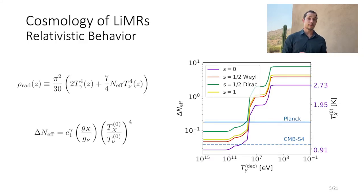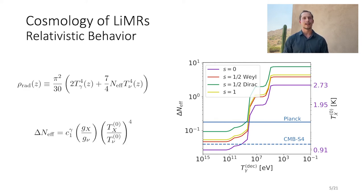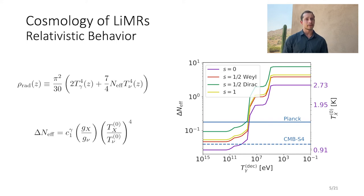Since a generic LEMUR will be relativistic at early times, we can generally expect that some of its overall effect on cosmology will manifest as a shift in N_eff. We can write this shift with respect to the known contribution to N_eff due to neutrinos. In this case, the shift depends only on the relic's temperature and degrees of freedom, in addition to its bosonic or fermionic nature, accounted for in the pre-factor C1. Considering Weyl fermions, Dirac fermions, scalar bosons, and vector bosons, we can infer how N_eff responds as a function of the relic temperature today, or equivalently the standard model temperature when the relic decoupled.